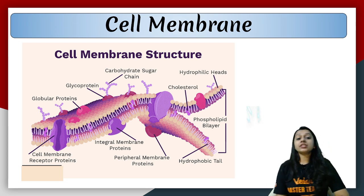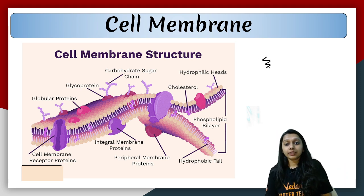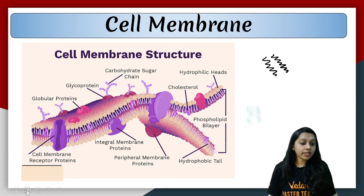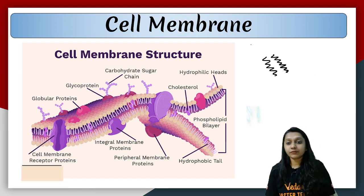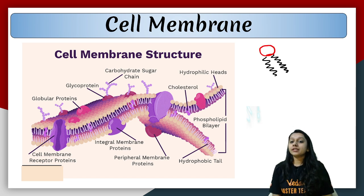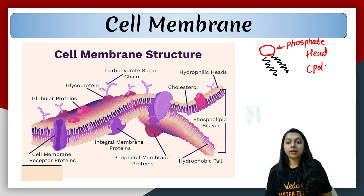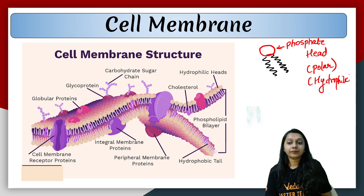What kind of structure is your cell membrane? It is a lipid. It has a saturated chain. It has a phosphate head, which is polar — meaning it has a charge, or you can say it is hydrophilic — water-loving.